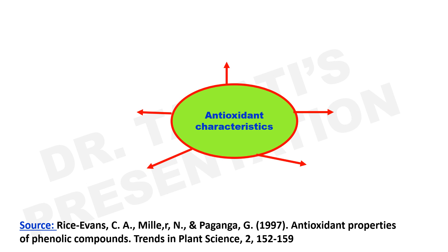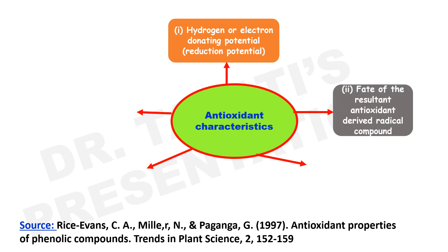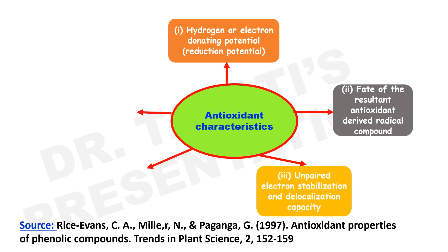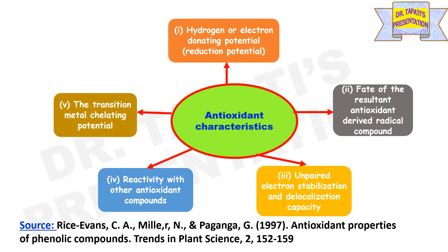The antioxidant property of a compound can be determined by its five main characteristics. First is hydrogen or electron donating potential or reduction potential. Second is the fate of the resultant antioxidant derived radical compound. Third is unpaired electron stabilization and delocalization capacity. Fourth is reactivity with other antioxidant compounds, and fifth is the transition metal chelating potential.